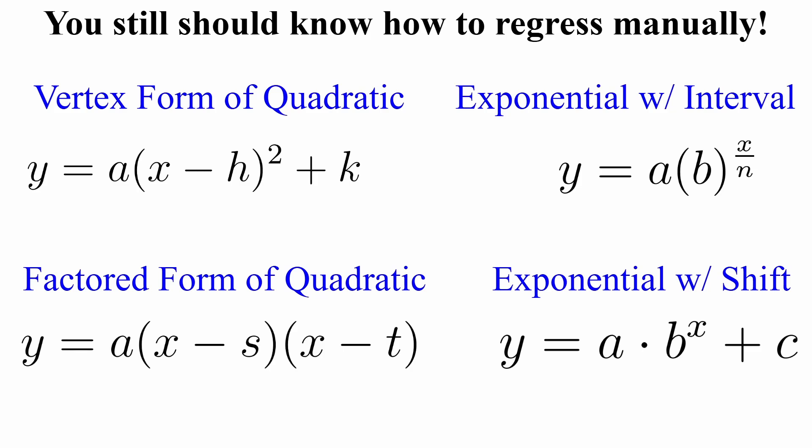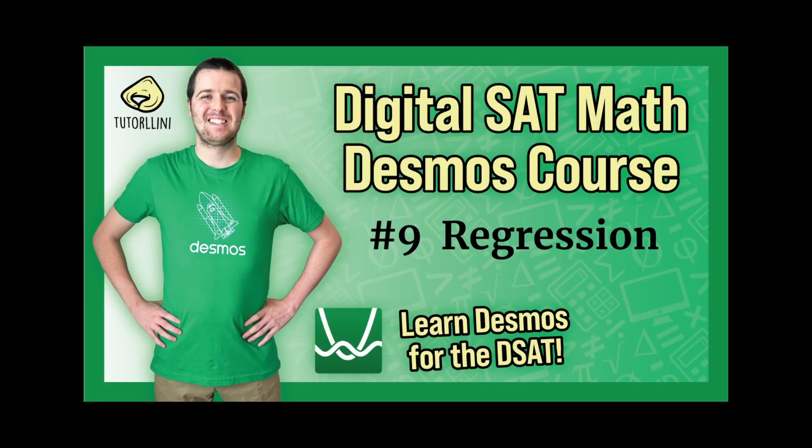Really common one is vertex form of a quadratic. If you go to do the quadratic regression, it's just going to do standard form as we just talked about. So I would still review that previous video that I made that goes over how to do the typing by hand, just in case you need it. I think knowing both ways is really helpful.